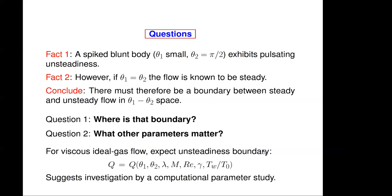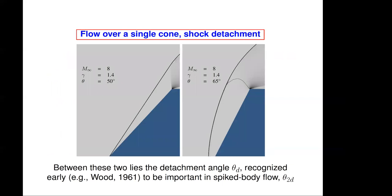And if we take viscous ideal gas flow, we expect the unsteadiness boundary to depend on seven parameters. These three geometrical ones, the Mach number, the Reynolds number, specific heat ratio and wall temperature ratio. So this is a huge parameter space which we hope to curtail somewhat later.